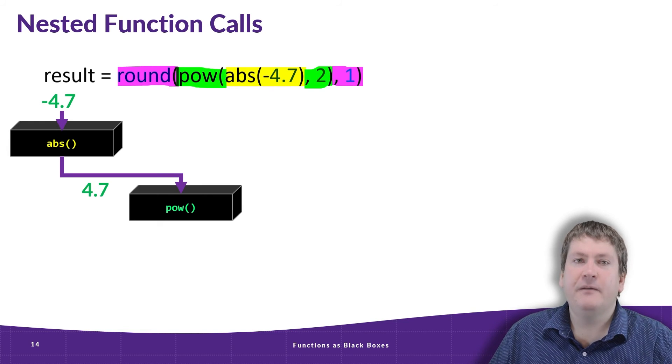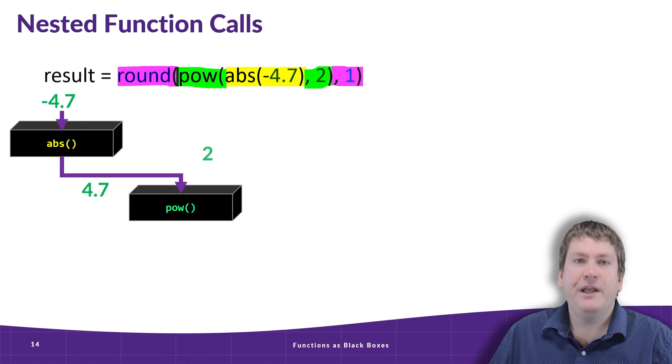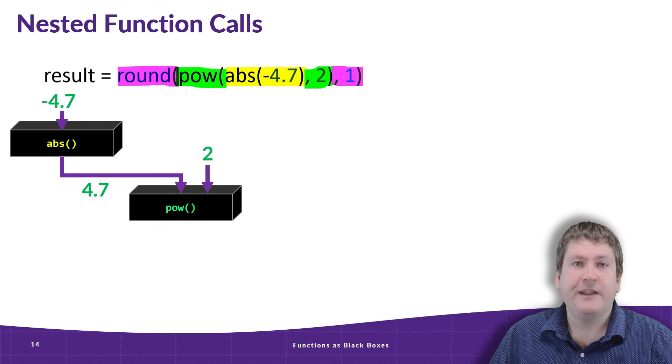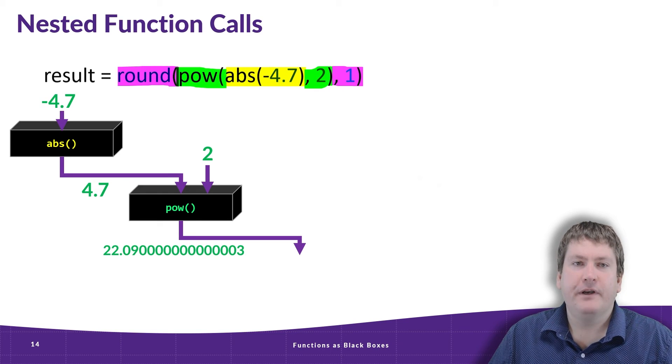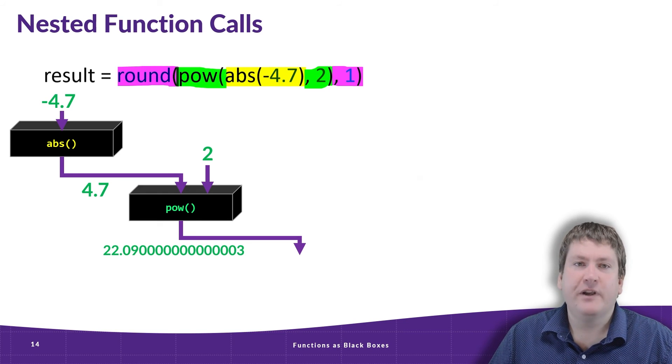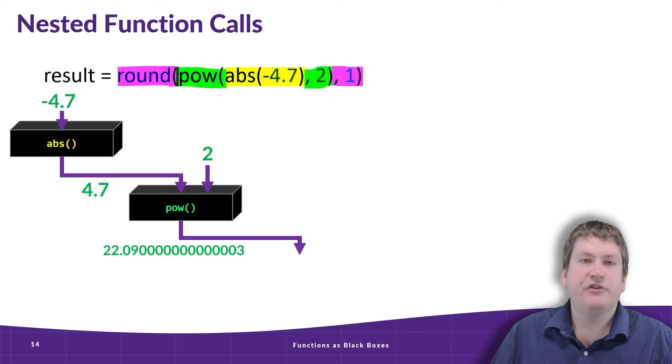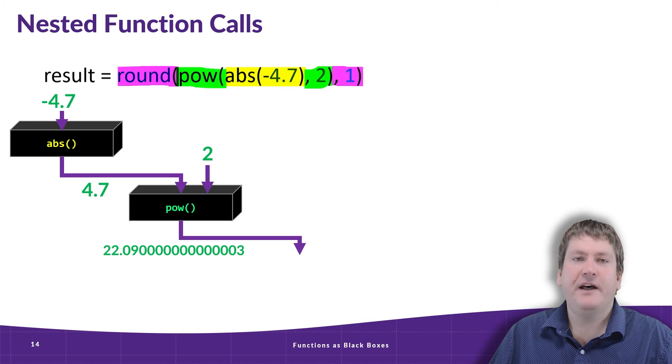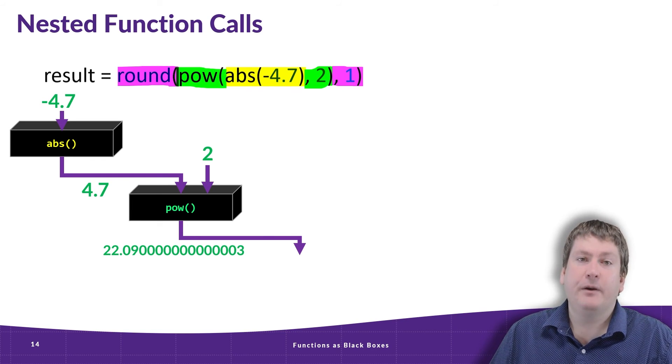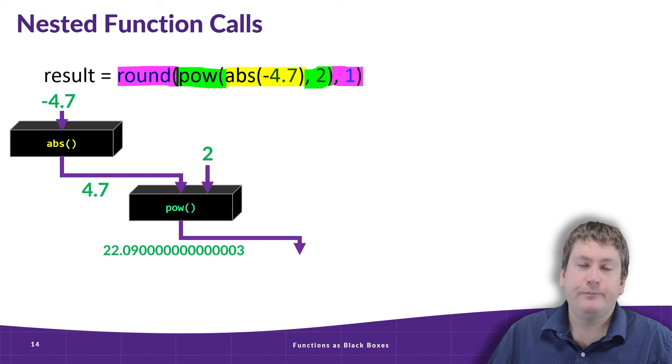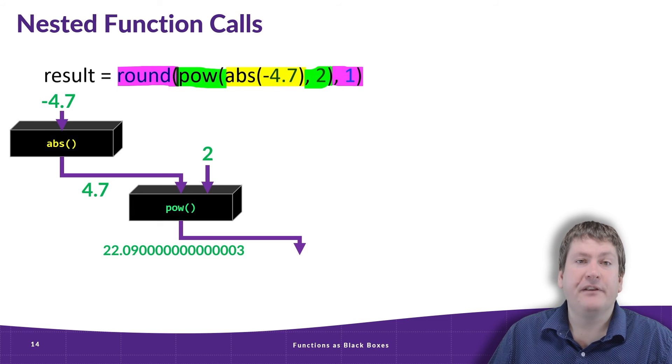So in this case, 4.7 becomes the argument for the base parameter of power, and we also have an input of 2 for the exponent. The pow function then produces a result of 22.09, and it does have the trailing 0003 due to floating-point error, which we've talked about before. But just to quickly summarize, floating-point values aren't exact in the computer's memory, so this means they produce an approximation which can have this small error to it. Which is why the next function call is important, because we round this value.